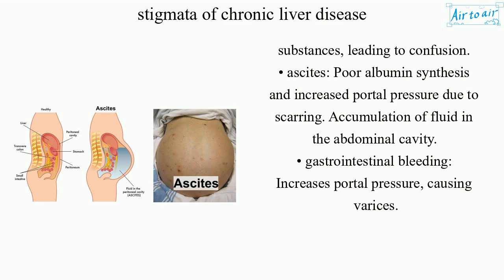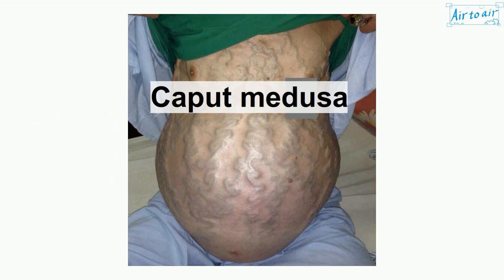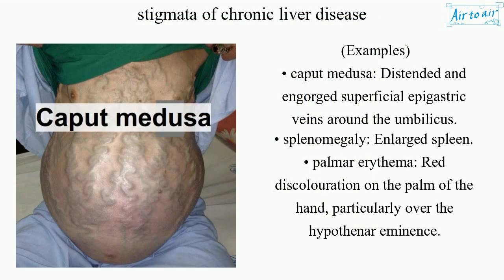Ascites results from poor albumin synthesis and increased portal pressure due to scarring, causing accumulation of fluid in the abdominal cavity. Gastrointestinal bleeding results from increased portal pressure causing varices. An example is Caput medusae, which refers to distended and engorged superficial epigastric veins around the umbilicus.